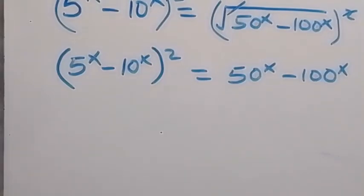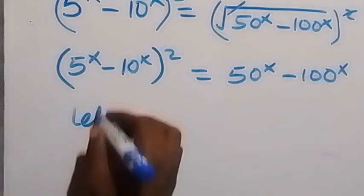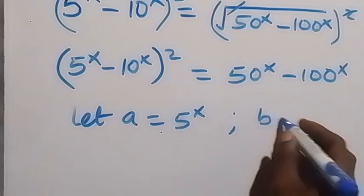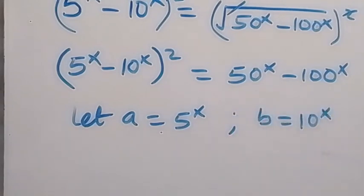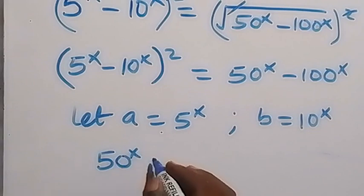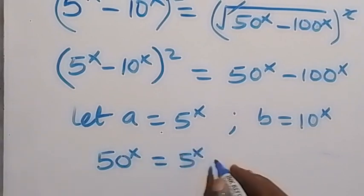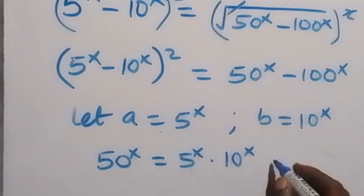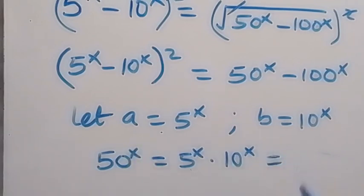From here, let's represent 5 raised to power x and 10 raised to power x with letters. We let a equal 5 raised to power x and b equal 10 raised to power x. We can also write 50 raised to power x in terms of a and b — that is, 5 raised to power x times 10 raised to power x, which is simply a multiplied by b, so 50 raised to power x equals ab.